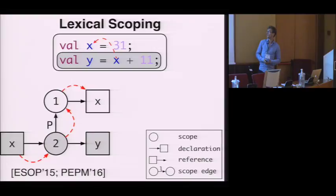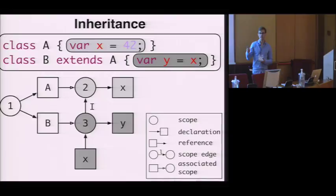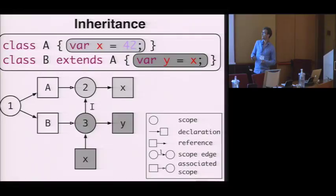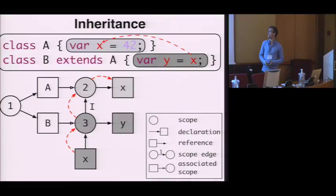Scope graphs also model more interesting binding patterns. Here is an example with classes and class-based inheritance. We have two classes, A and B, where B extends A, and by extending A, all of the fields defined in class A become visible inside the scope of class B. We model this in scope graphs by associating a scope with each of the two class declarations. We model inheritance by having an import between the two scopes. And now we can resolve the x variable inside the body of the B class to the x declaration in the parent class by a path in the graph.